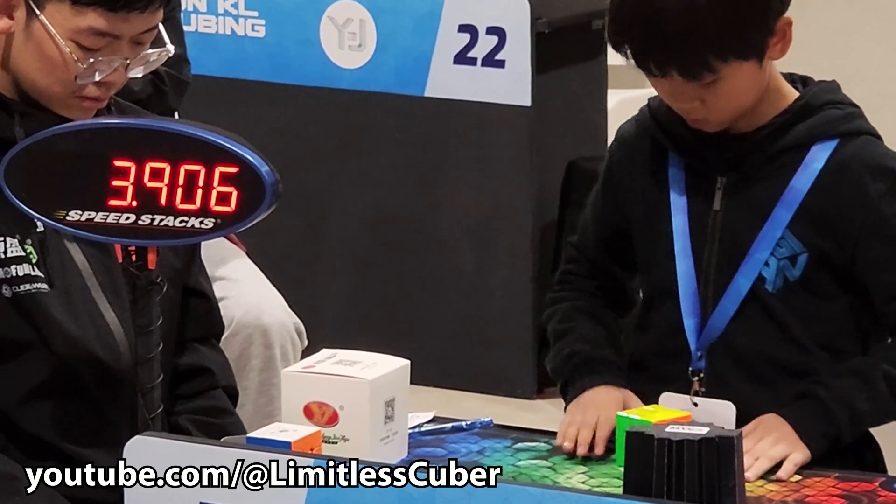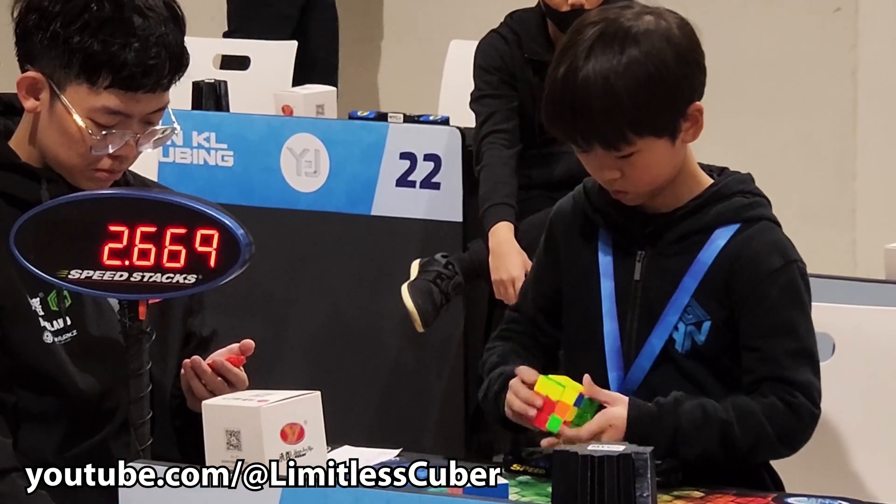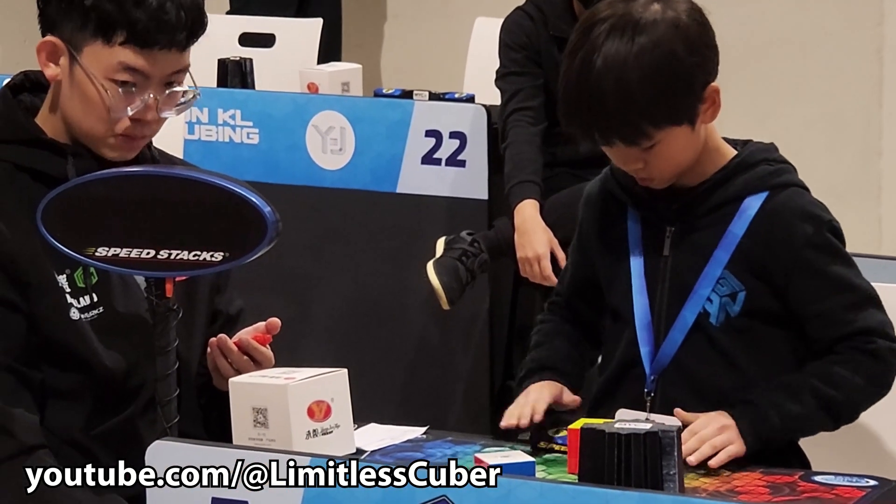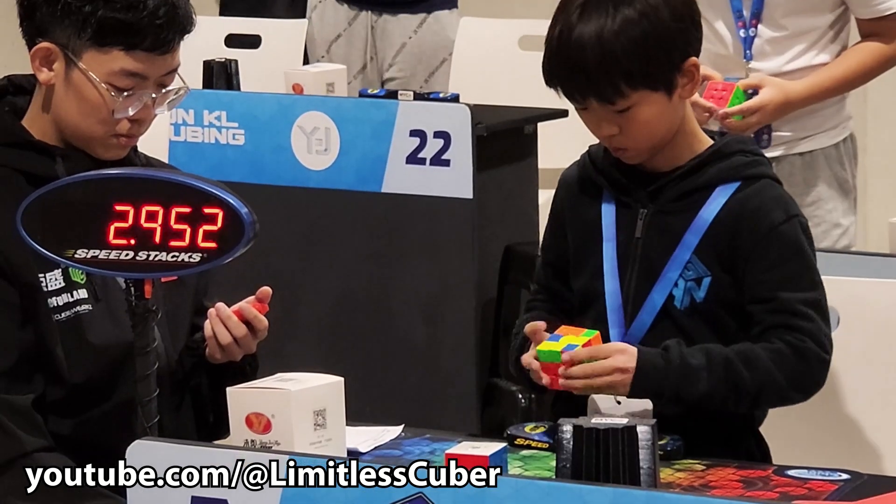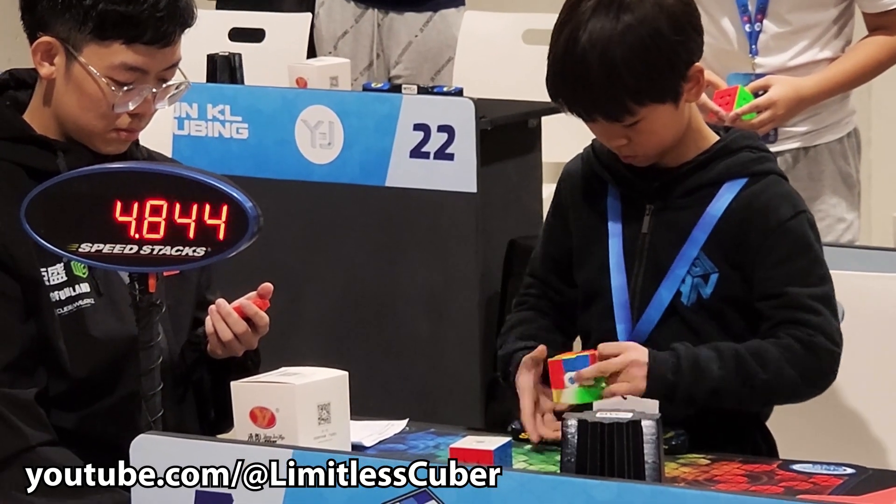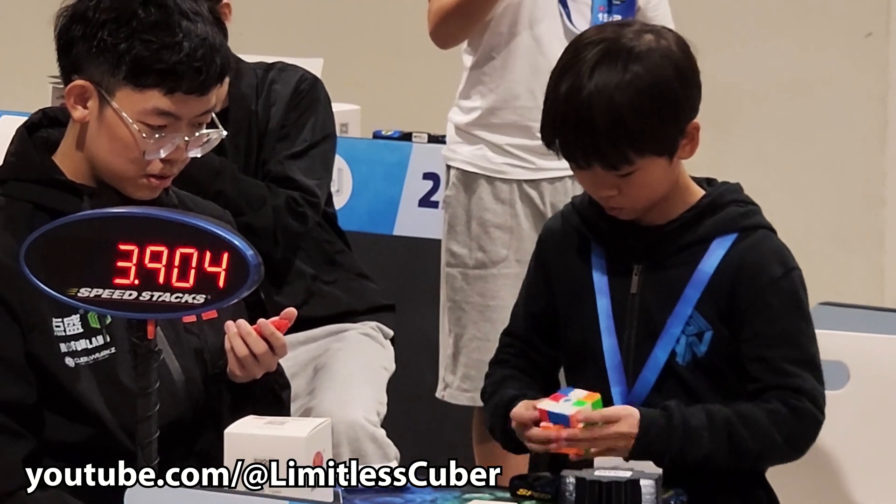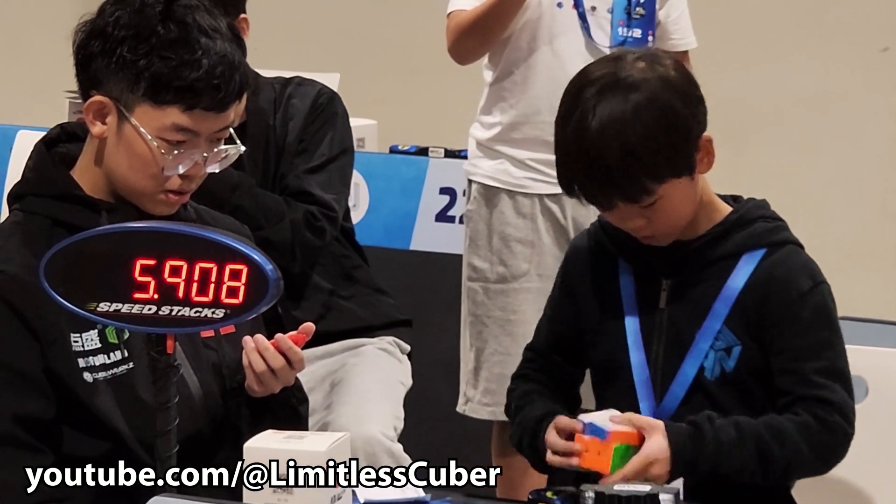The new world record in solving Rubik's cube was set by a 9-year-old boy Yen Wen from China. He solved the puzzle in 4.69, and now we're going to show you how the little genius did it.